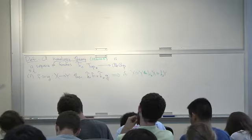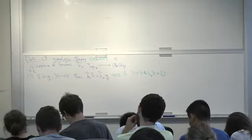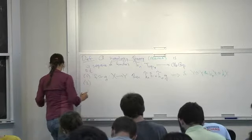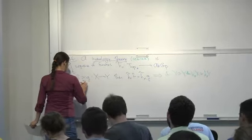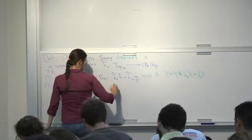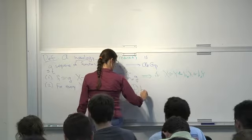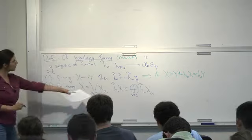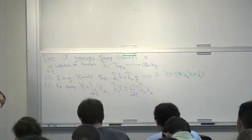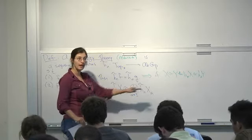The second thing we want: we want to be able to take a big space and decompose it into simpler spaces. For every wedge sum, if X is a wedge sum of components Xα, then hₙ(X) is isomorphic to the direct sum of hₙ(Xα). You have a bunch of inclusions such that the wedge of the inclusions gives you an isomorphism — apply hₙ to each inclusion to get a map from the direct sum into the whole, and that should be an isomorphism.